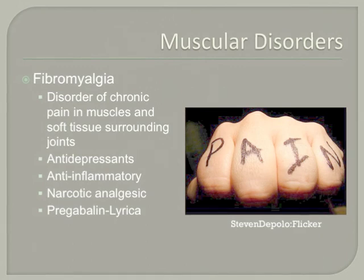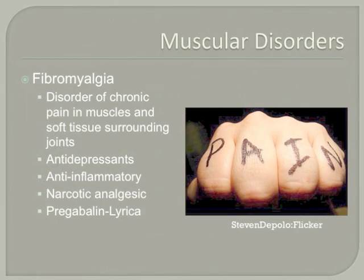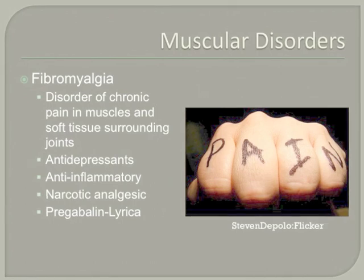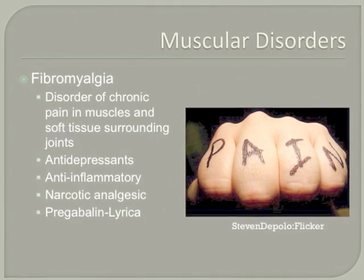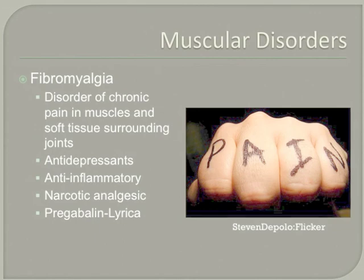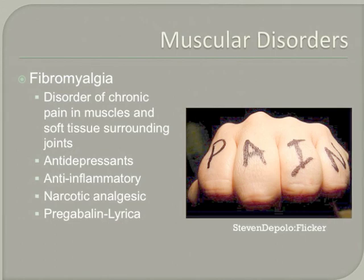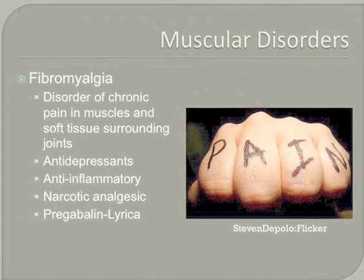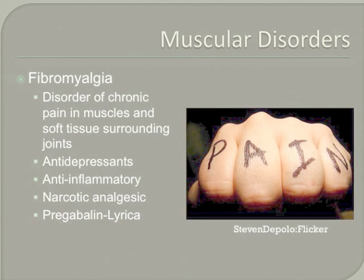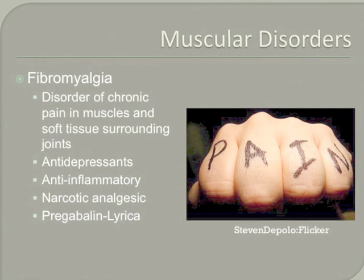Fibromyalgia is a disorder of chronic pain in the muscles and soft tissues surrounding the joints. This disorder can be really difficult to manage. Treatment includes decreasing contributory factors like lack of exercise, physical therapy, antidepressants, anti-inflammatory medications, trigger point injections, and narcotic analgesics. Pregabalin, or Lyrica, can be used for fibromyalgia or neuropathy, which is nerve pain. Narcotics many times won't help nerve pain. Pregabalin is called a GABA agonist — GABA is a neurotransmitter that quiets nerves, so we enhance this chemical to quiet things down.